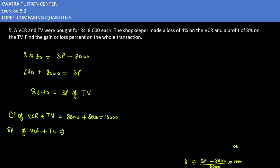Selling price of TV is 8,640 and VCR is 7,680. Now if you combine both of them, you will get the value of 16,320.